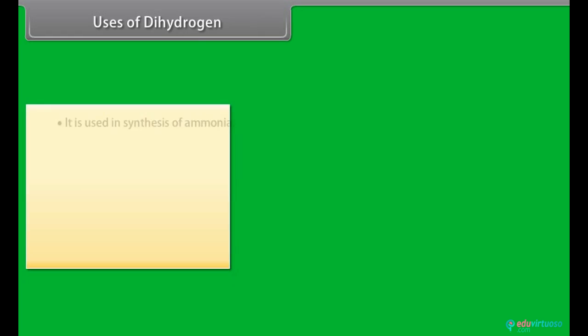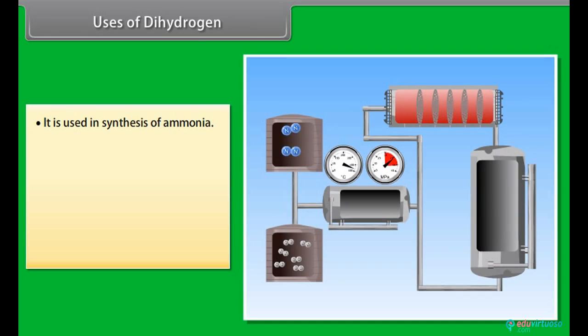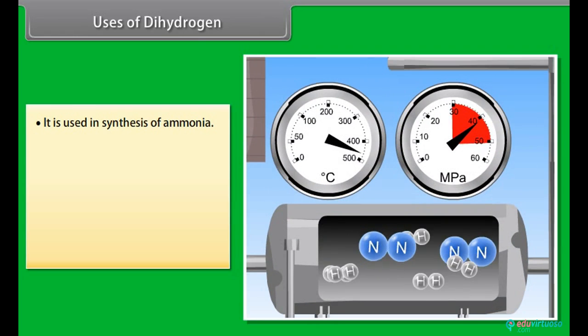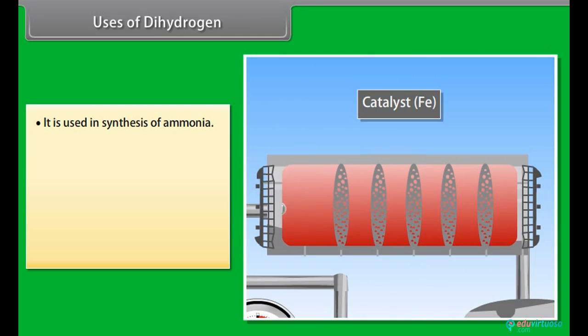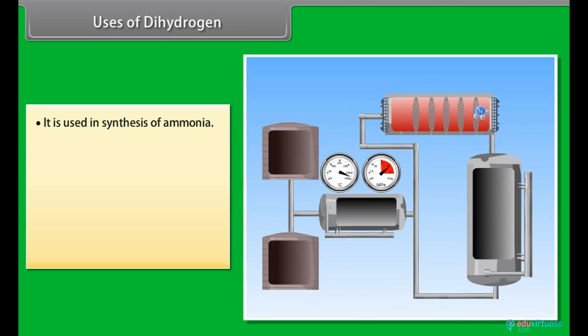Uses of dihydrogen: It is used in synthesis of ammonia. Nitrogen and hydrogen passed to heater where these are heated up to a certain temperature. After that, they are compressed and then passed to heater where the reaction takes place. After that, the mixture is passed to waste heat boiler from which ammonia is cooled and then stored and nitrogen and hydrogen are recycled.